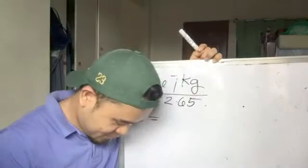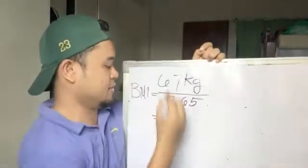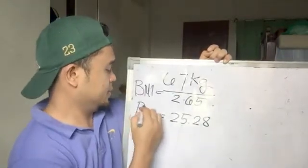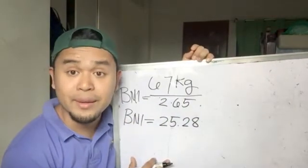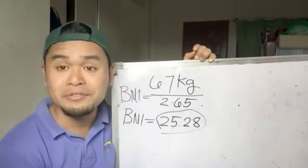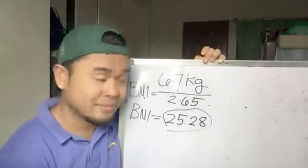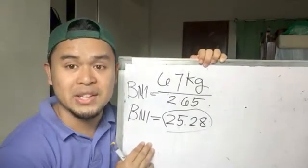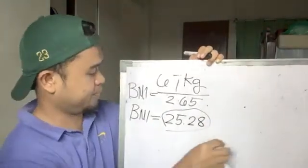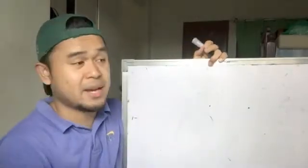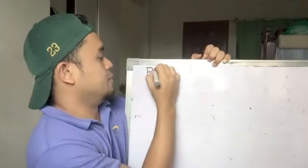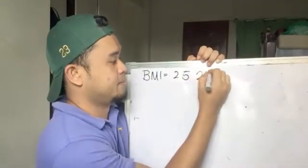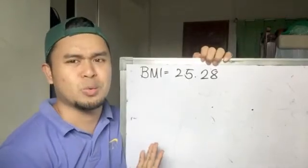My BMI result is 25.28. So what does this number mean? Remember, my BMI is 25.28. Let me explain the four categories of BMI and why we need to know this number.